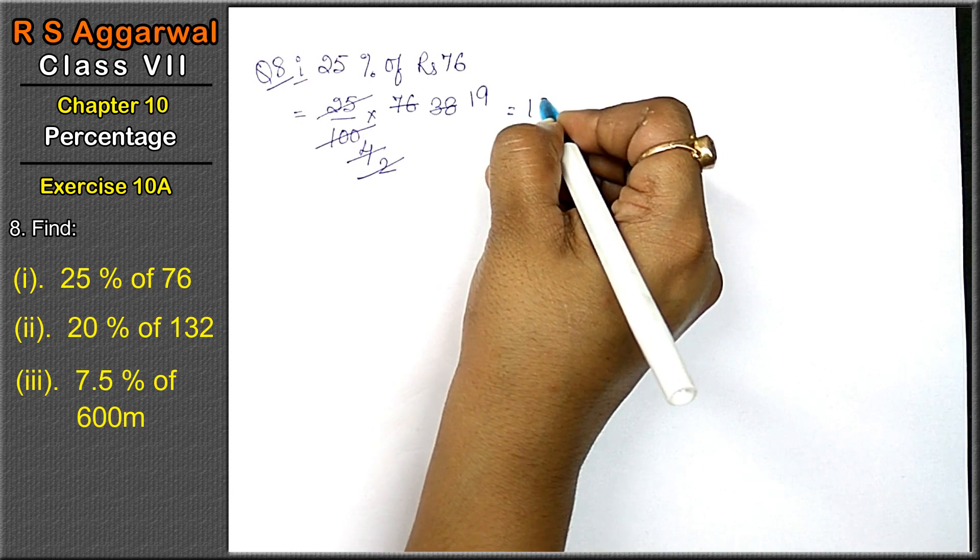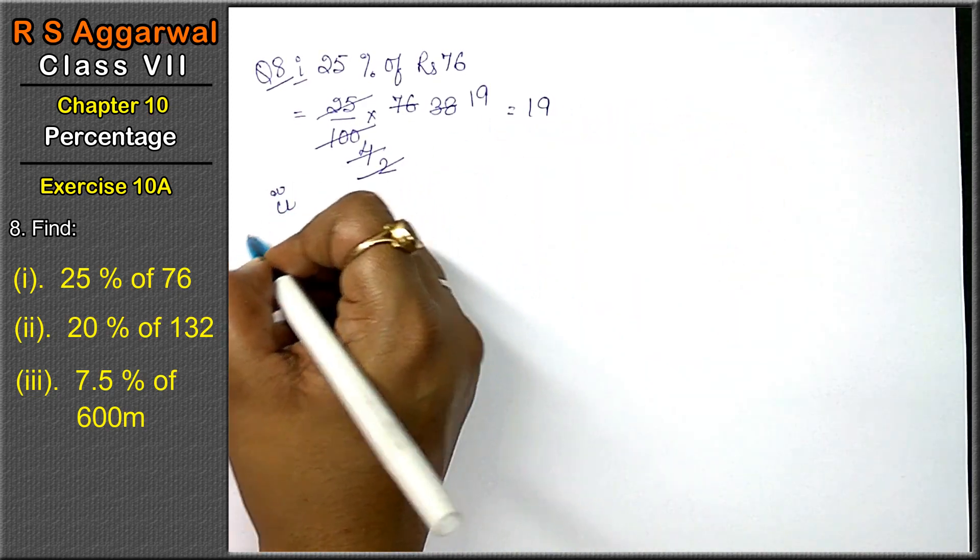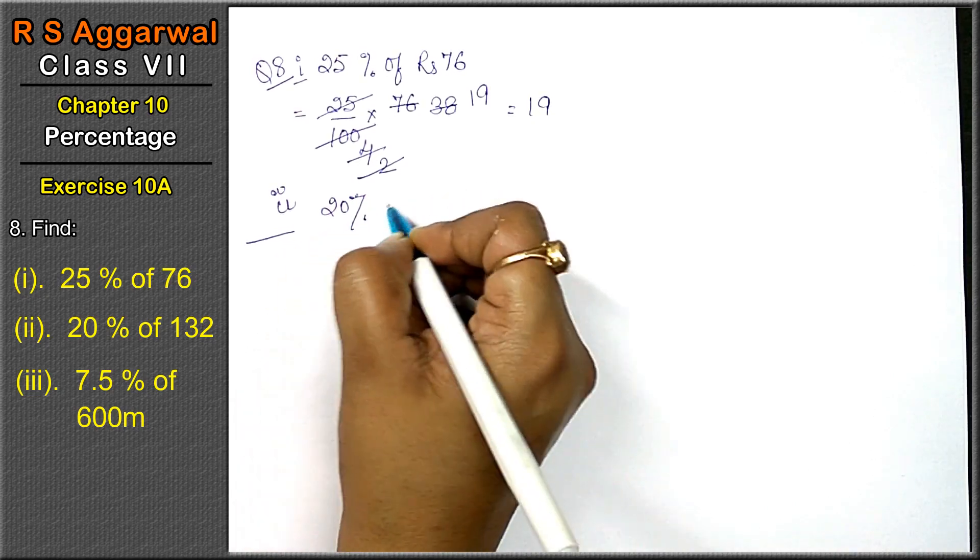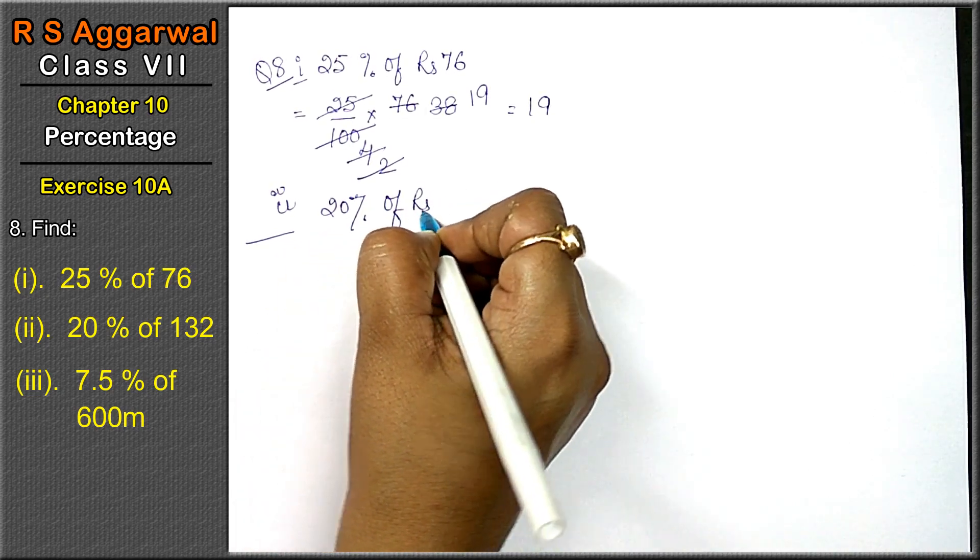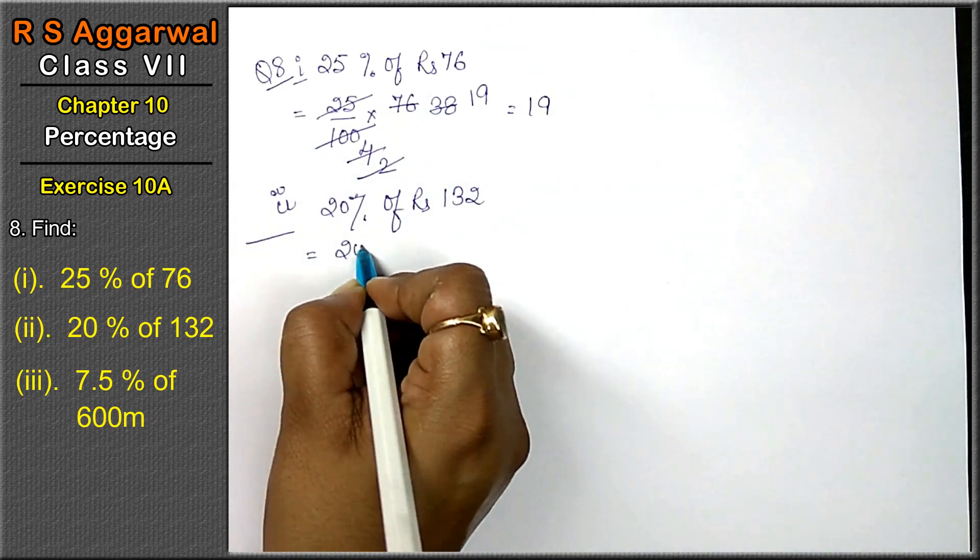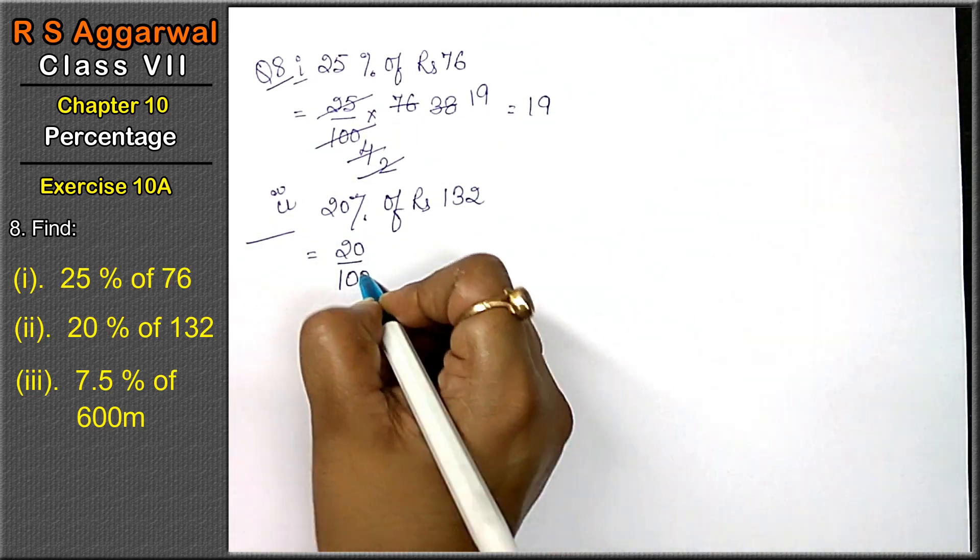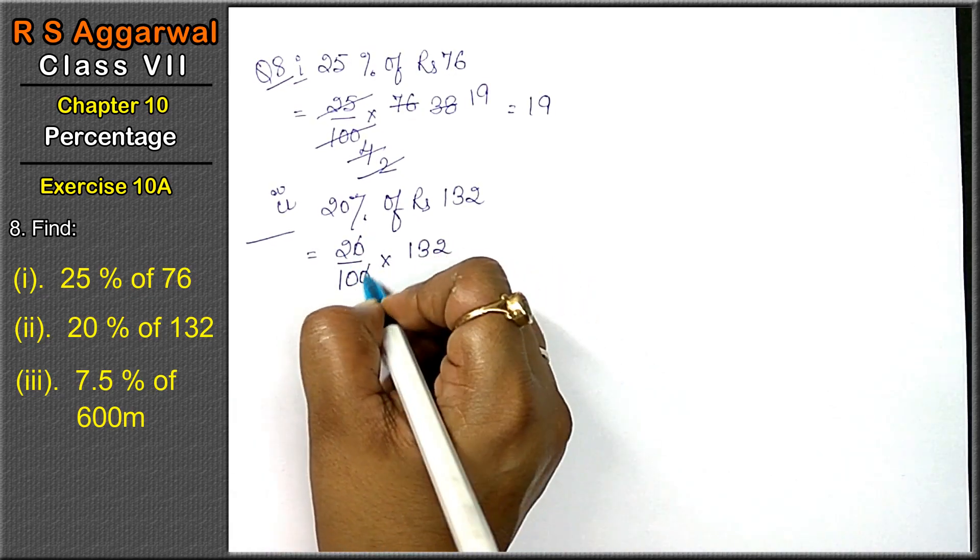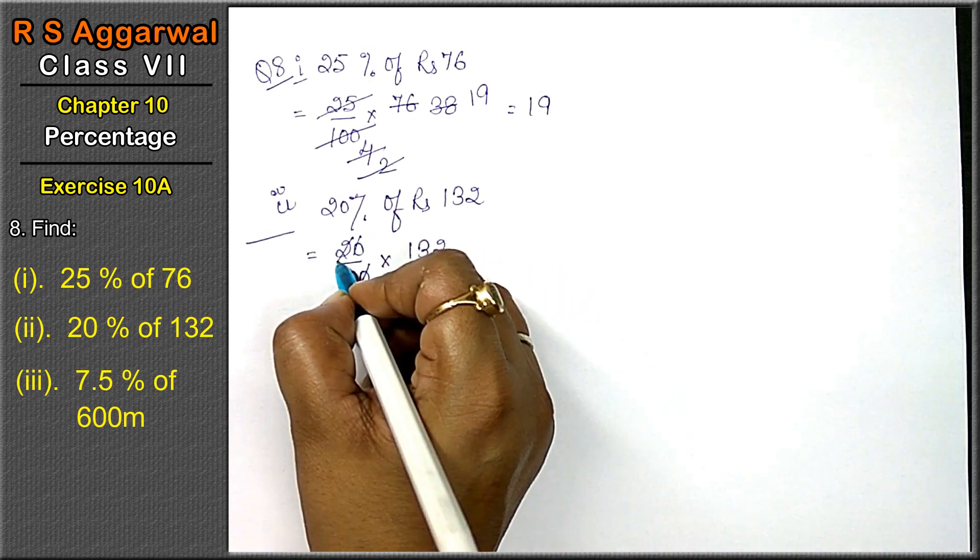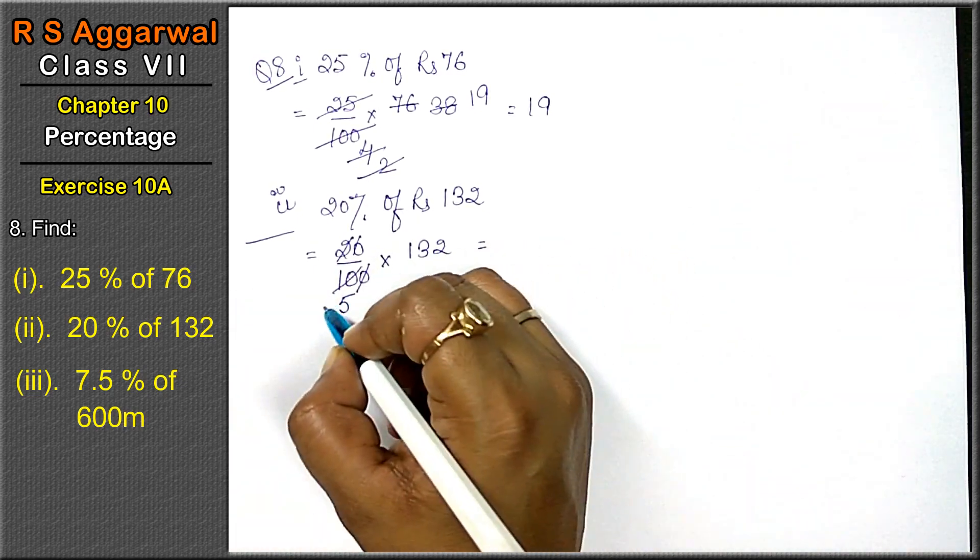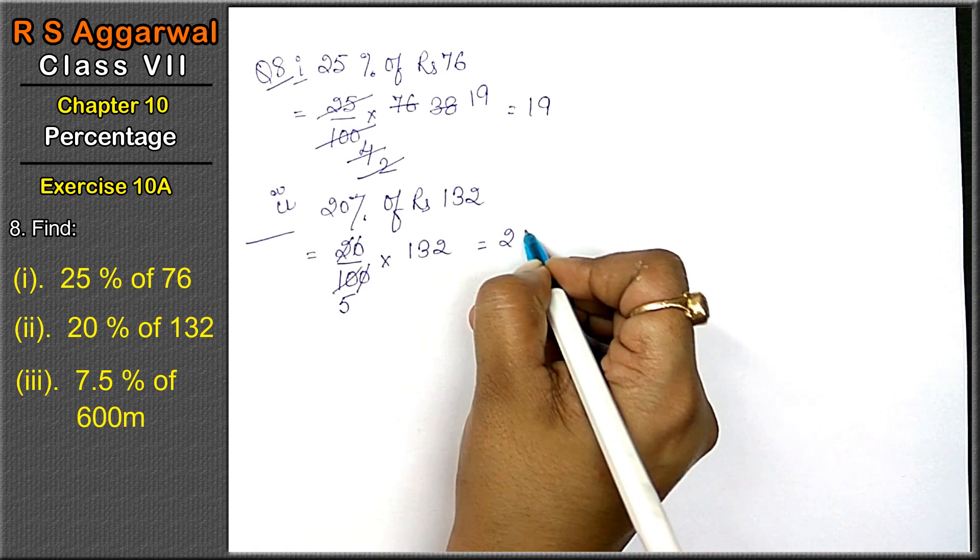Let's do second part: 20% of 132 rupees. 20% means 20 upon 100. 'Of' means multiply by 132. 2 ones are 2, 2 fives are 10, that means 5 twos are 10, 5 sixes are 30. Point 4 is the answer.